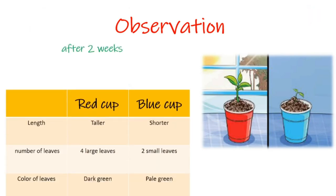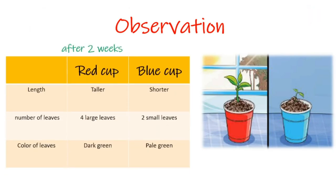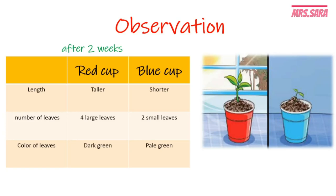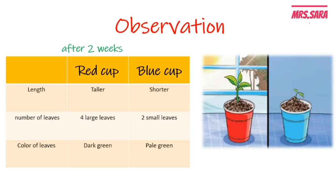After two weeks, the plant in the red cup is taller than the one in the blue cup. The number of leaves in the red cup is four large leaves, but in the blue cup there are only two small leaves. The color of the leaves in the red cup is dark green, but in the blue cup it is pale green.